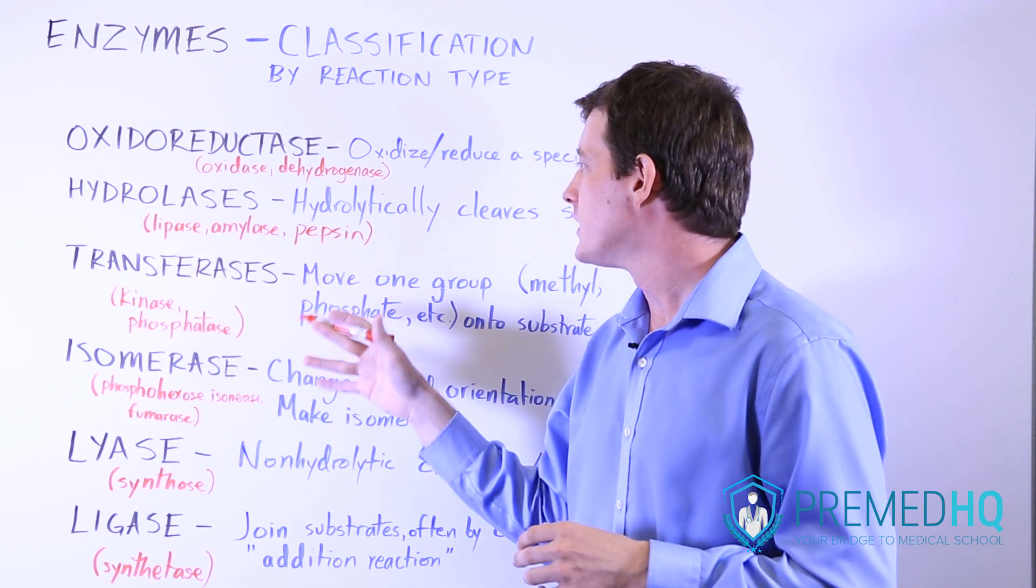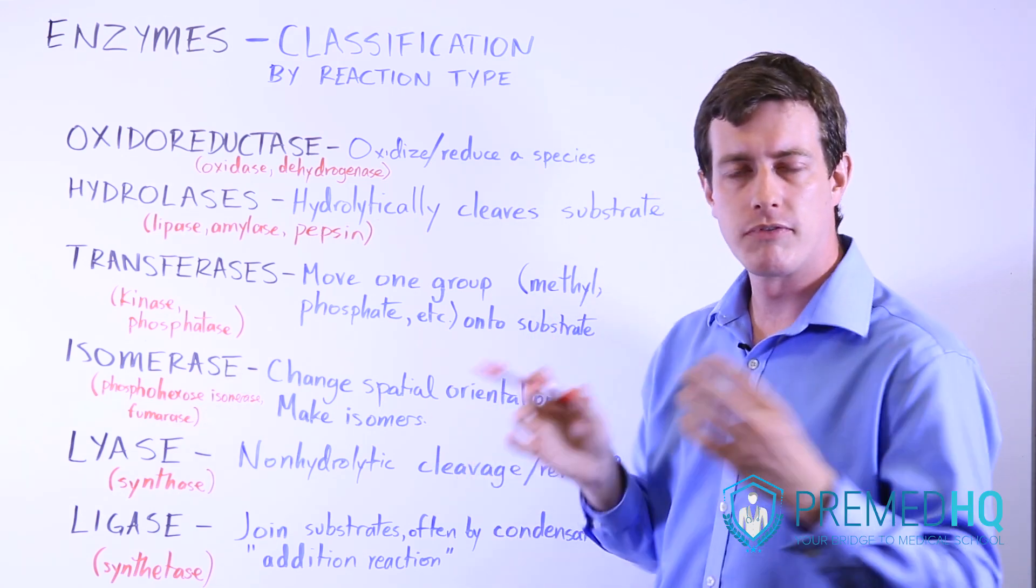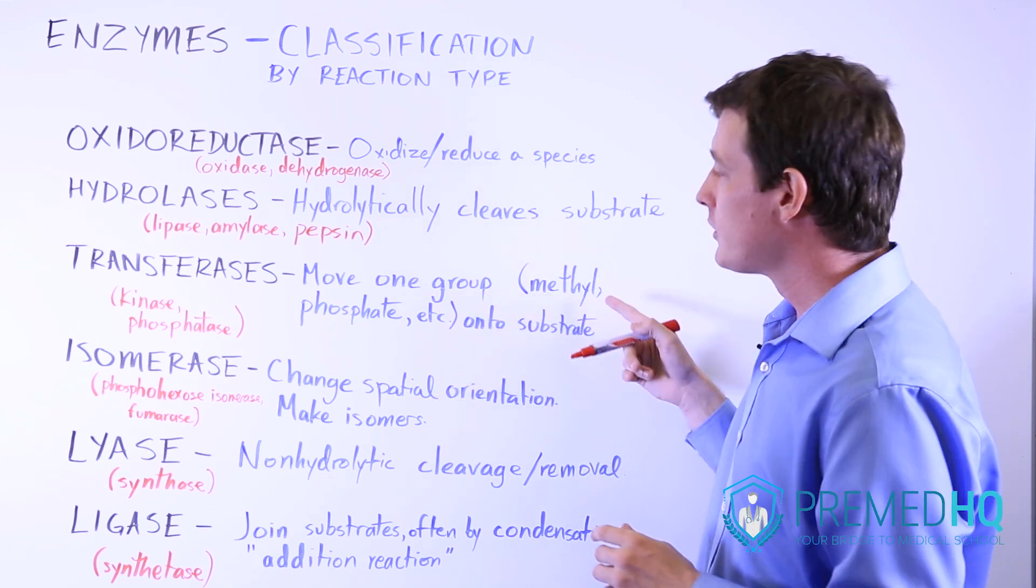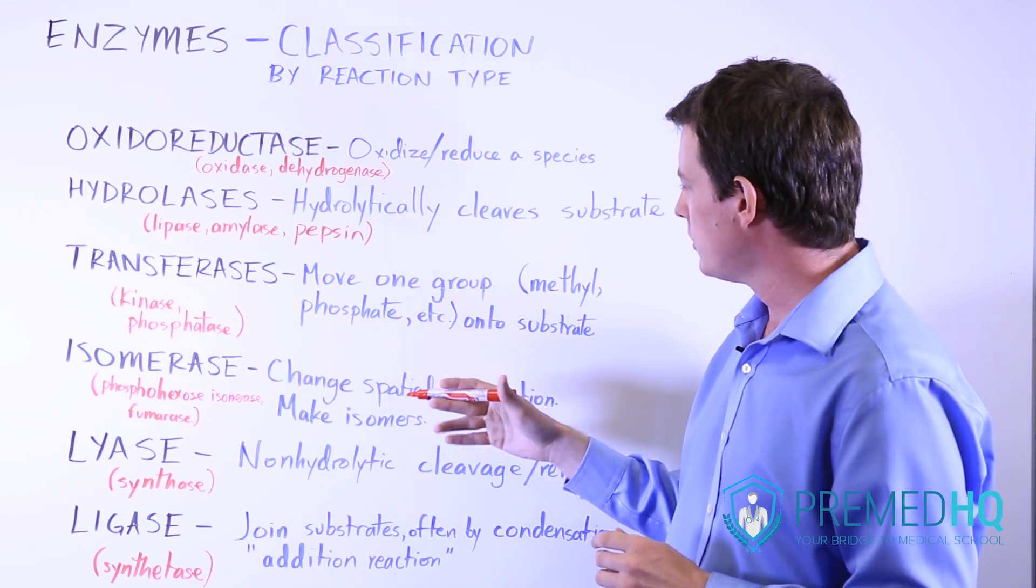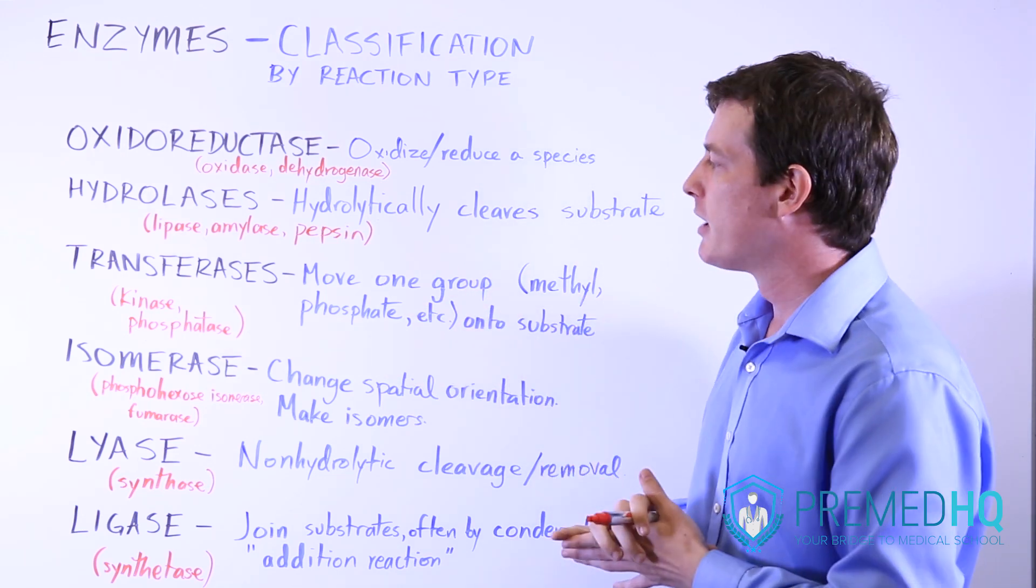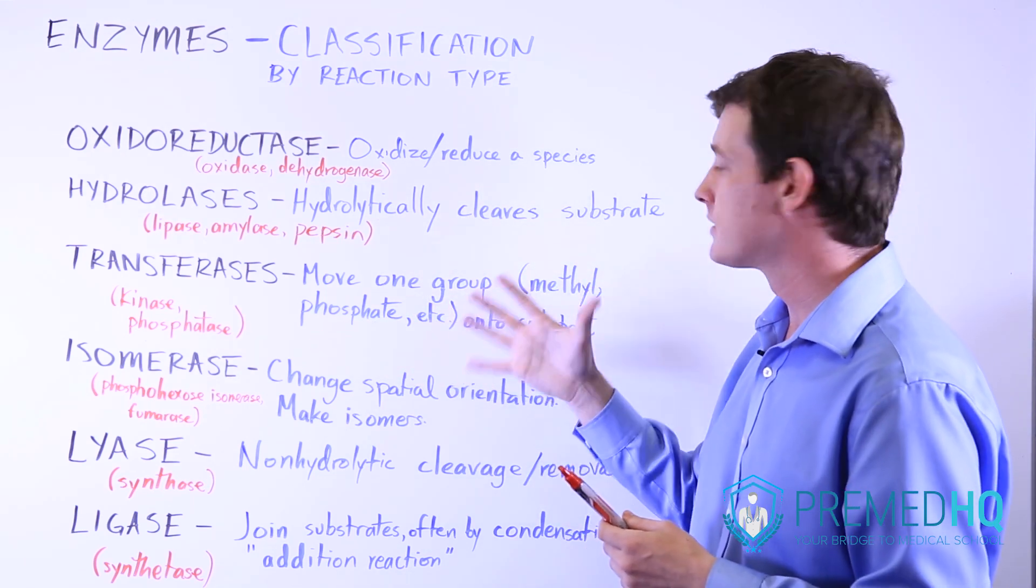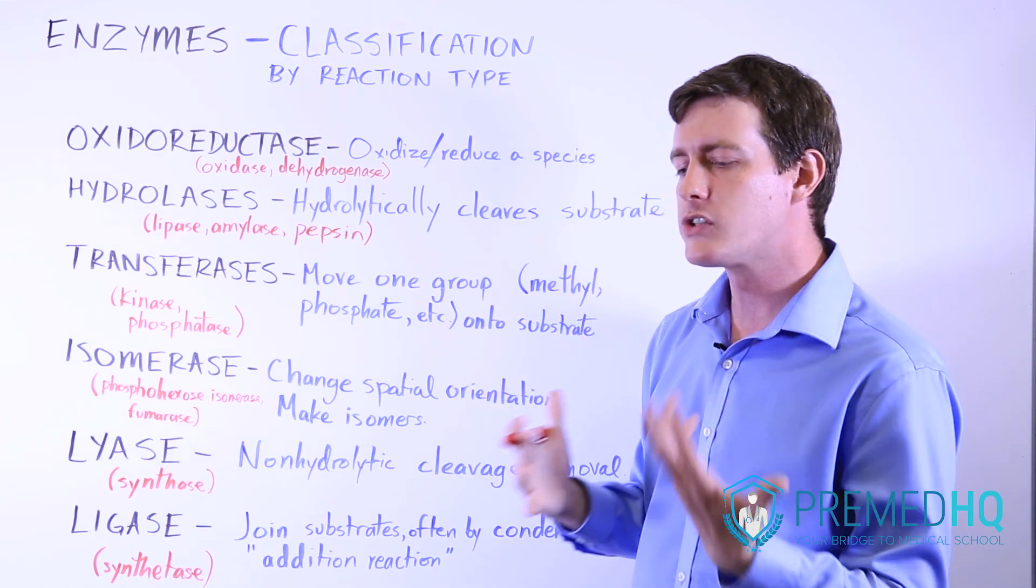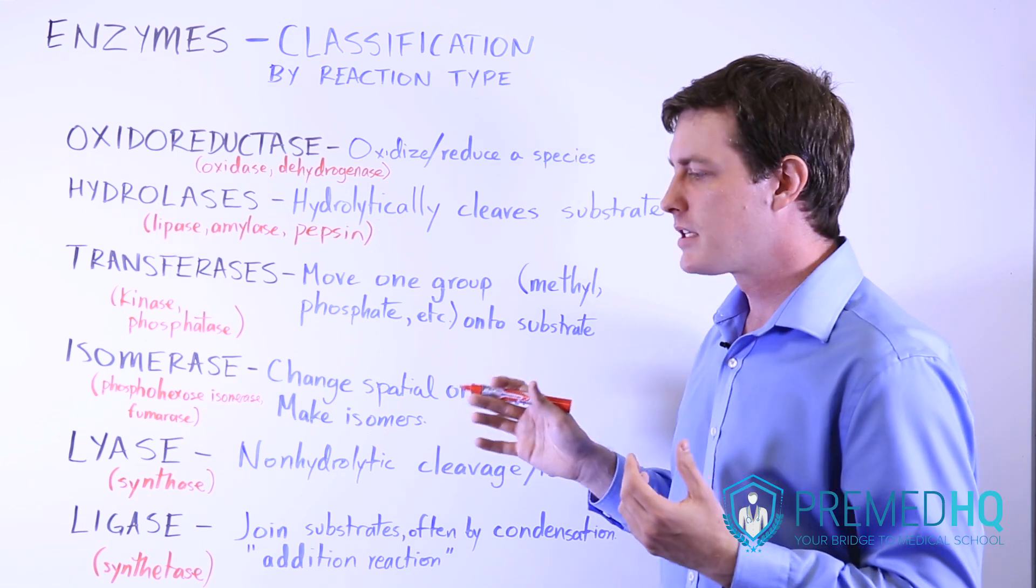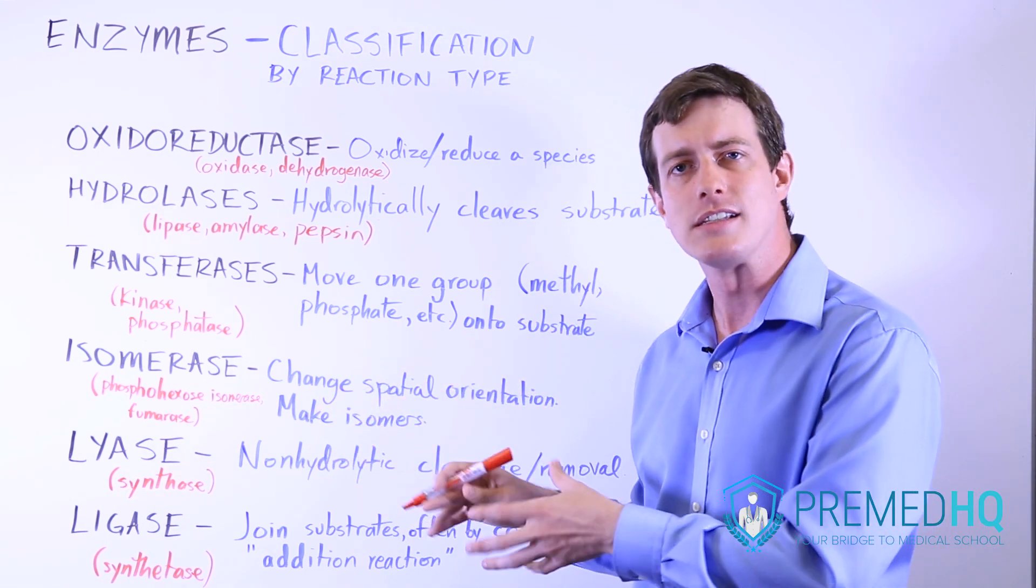Then we move on to transferases. As the name implies, these transfer some group from one compound to another. They might move a methyl group or a phosphate group onto your substrate, or they might remove it from your substrate. A lot of times when you're processing methyl groups or phosphates, sometimes these things are also useful to help regulate functions. For example, some proteins, when you phosphorylate them, become active or inactive.